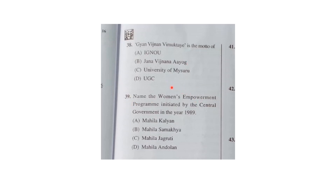The fourth question was also a little difficult: 'Name the women's empowerment program initiated by the central government in the year 1989.' The correct answer is option B — Mahila Samakhya. I hope you got it right.